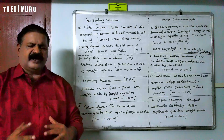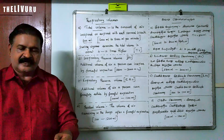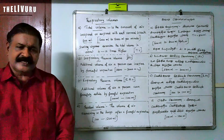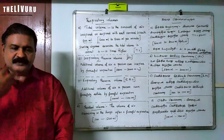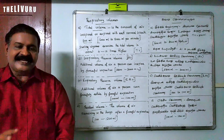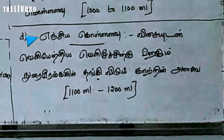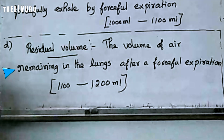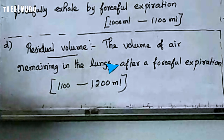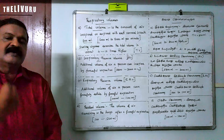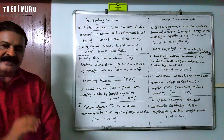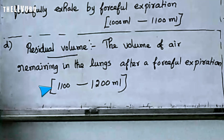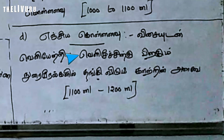This is residual volume — the volume of air remaining in the lungs after a forceful expiration.